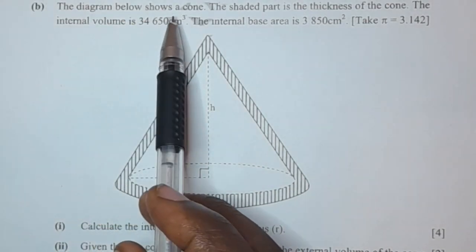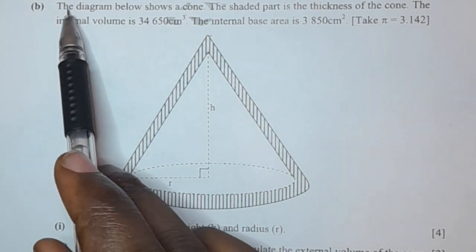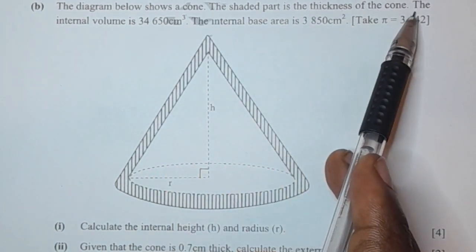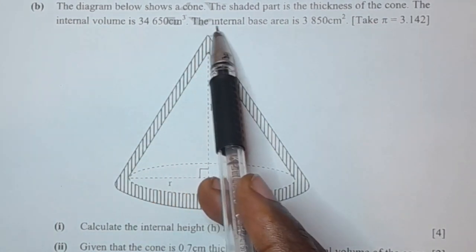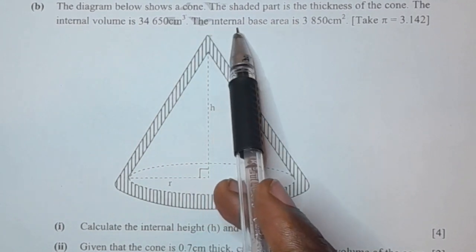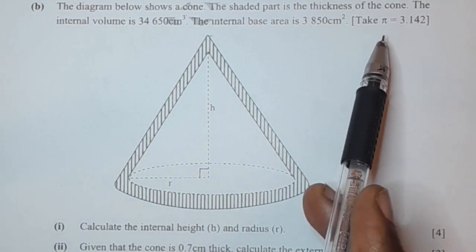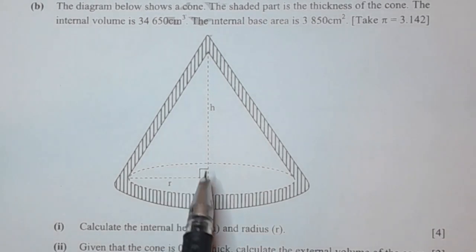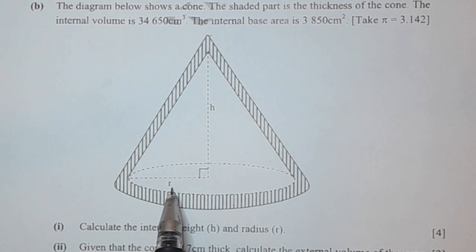In this video we're going to look at this exam question. The information we've been given is as follows: the diagram shows a cone, the shaded part is the thickness of the cone, the internal volume is given, and the internal base area is also given. Take pi to be 3.142. The question asks us to calculate the internal height h and the radius r.